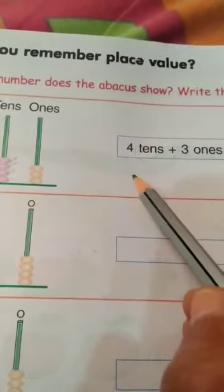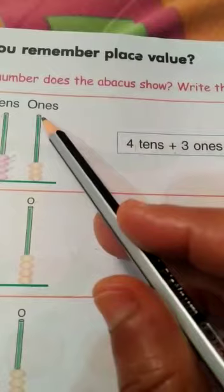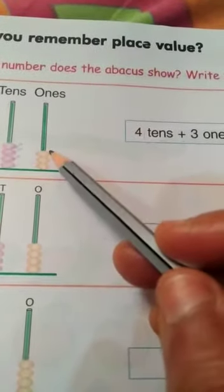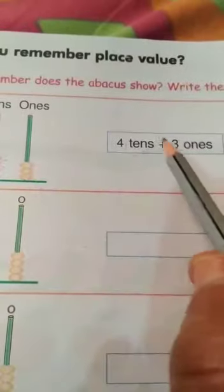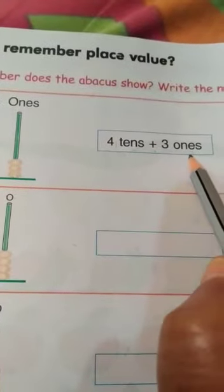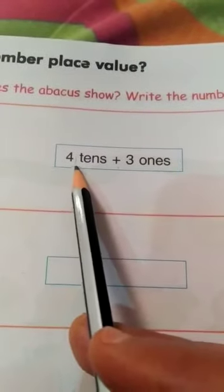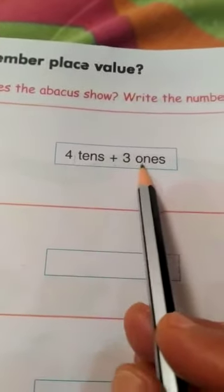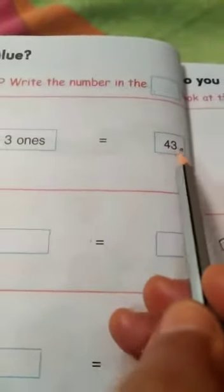Now count the rings in ones. 1, 2, 3. Now write here 3 ones. So here we write 4 tens plus 3 ones is equal to 43.